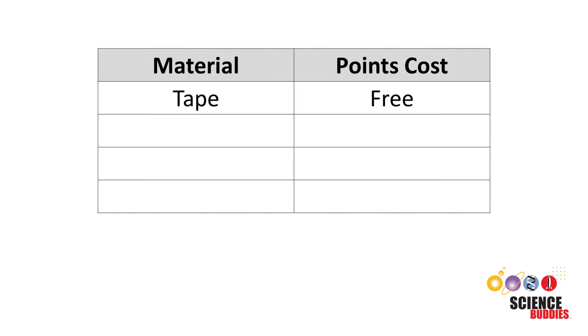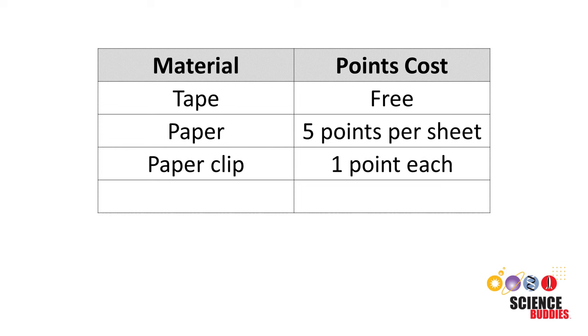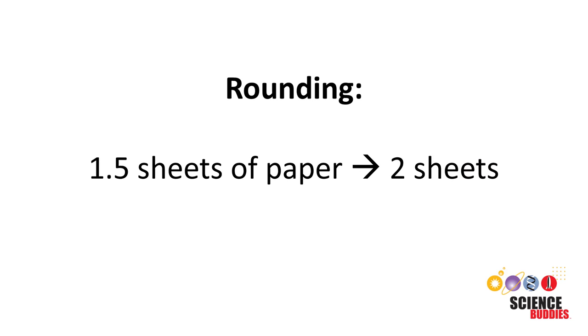Tape is free, but each sheet of paper costs five points, each paperclip costs one point, and every 50 centimeters of string costs one point. You must round up to the nearest whole unit for each material. For example, if you use one and a half sheets of paper, you would round that up to two sheets.